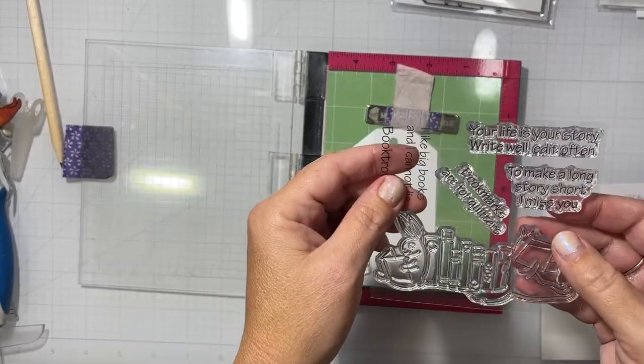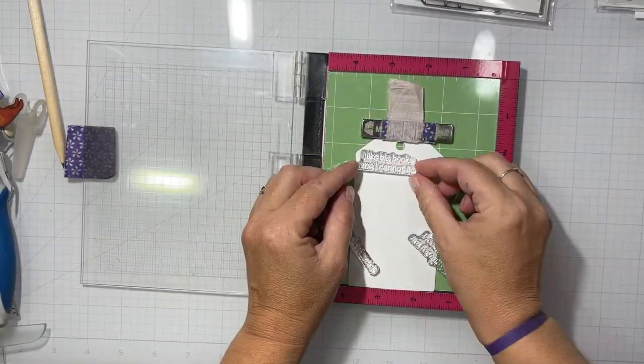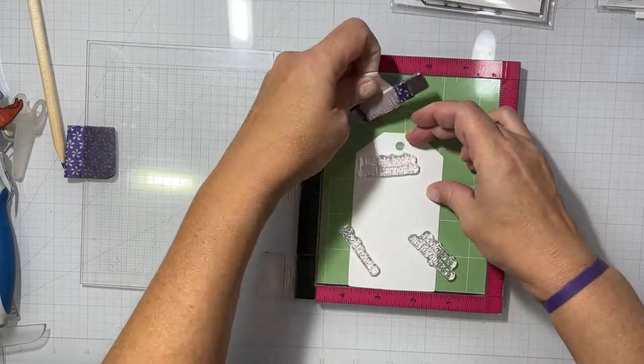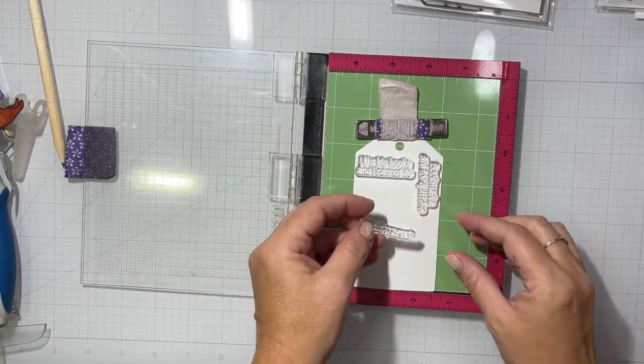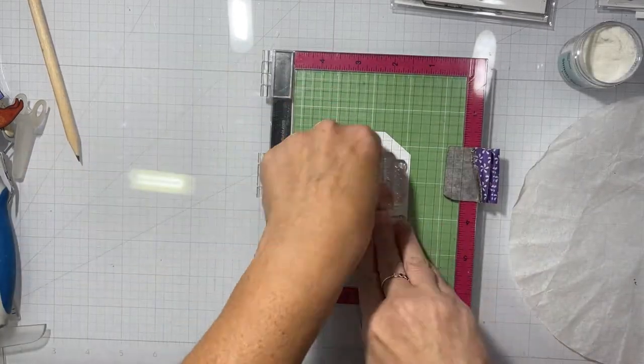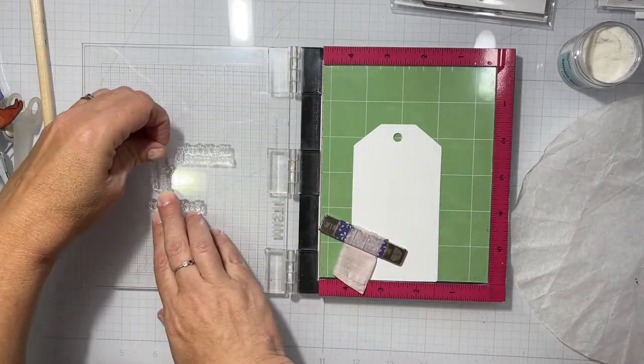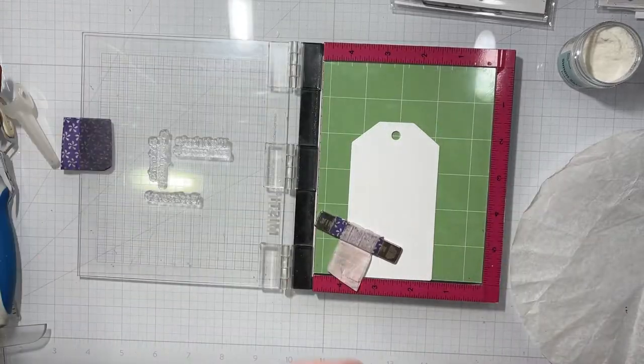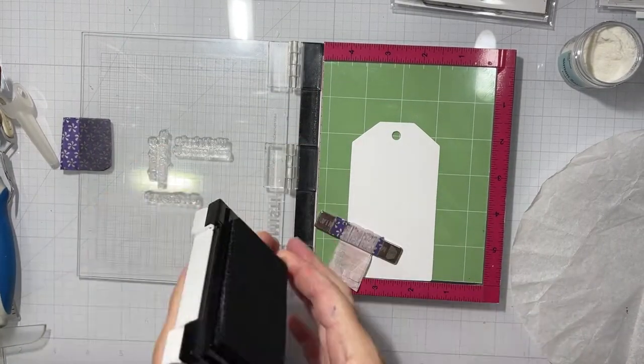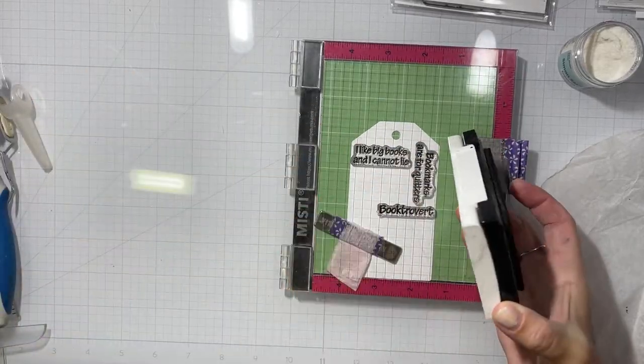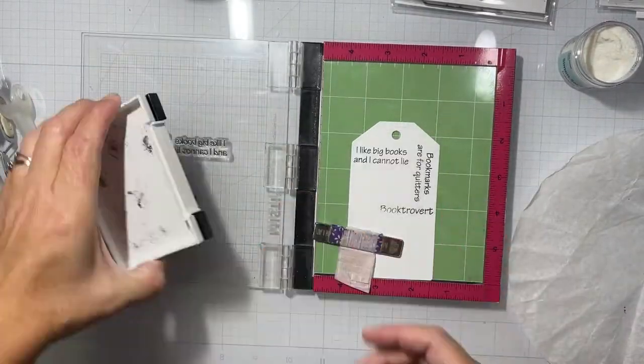So first I took a tag die I had from my stash to make a smaller size bookmark. I'm taking the sentiments, most of the sentiments in the stamp set and trying to fit them where they may. Just repeat them over and over as a background for the bookmark. Really simple. Just wanted the stamped and heat embossed sentiments and then some ink blending.